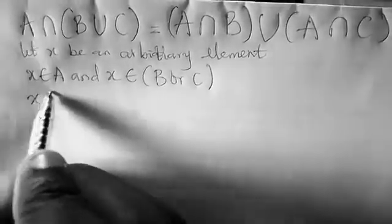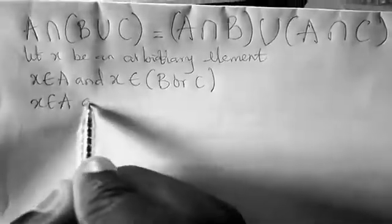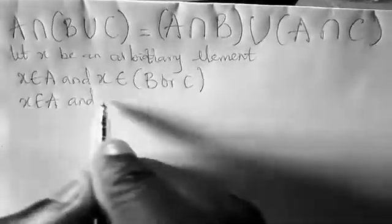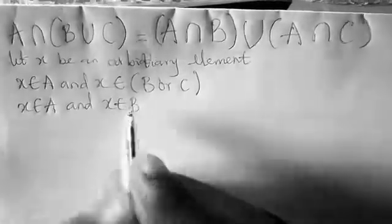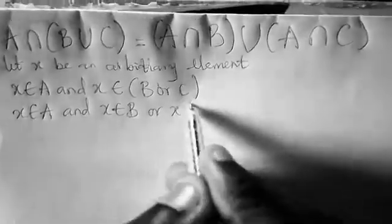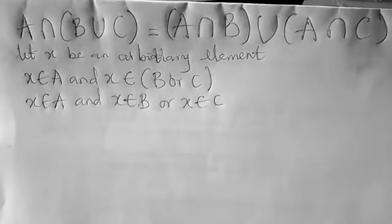Your x will be a member of A, and you open this bracket. So x will be a member of B or x will be a member of C. Do you get what I'm saying now?